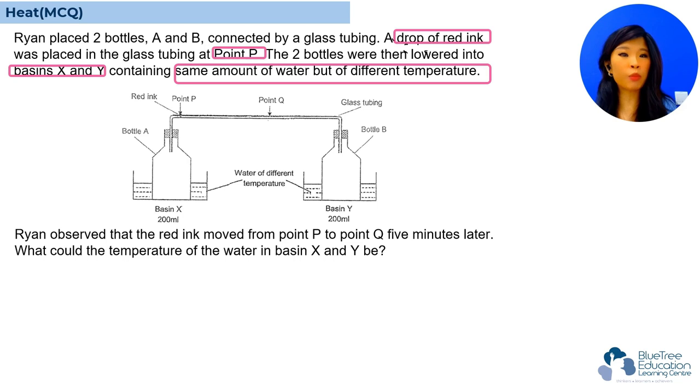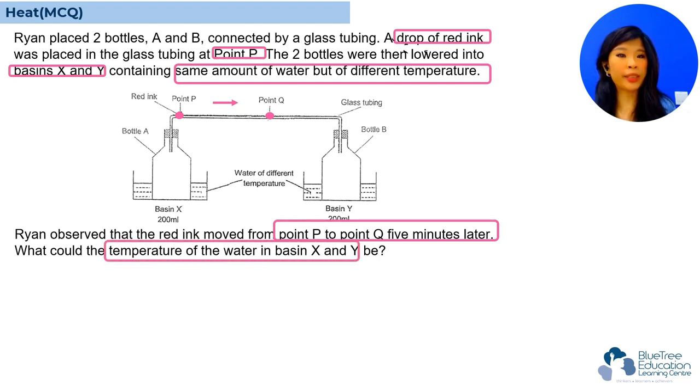Brian observed that the red ink moved from point P to point Q five minutes later. So, we can take a look at the red ink at point P. It will move to point Q as the arrow indicated. What could the temperature of the water in basins X and Y be? I'm not sure, do you remember the experiment that we did before?